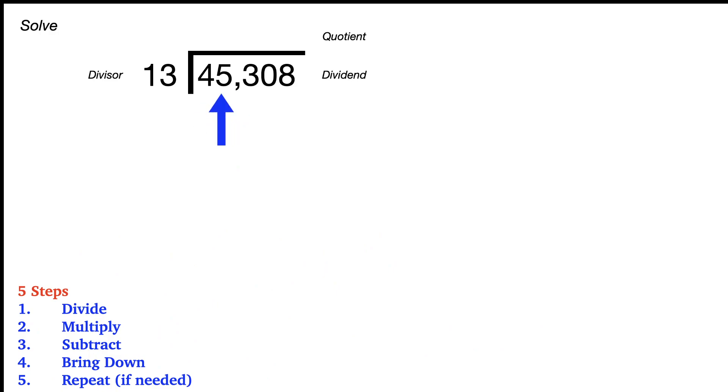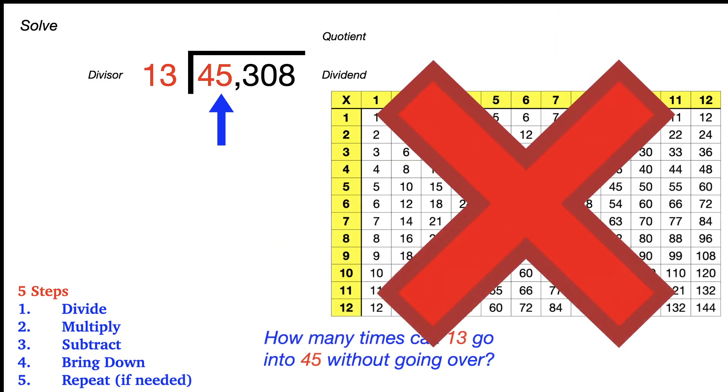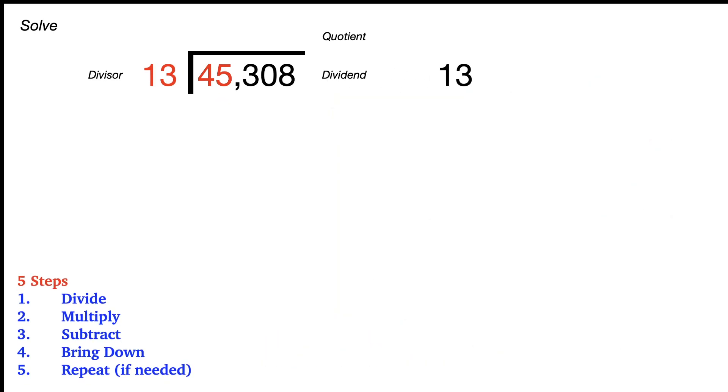All right, because it's two digits we'll start with the second digit. Ask yourself, this is the divide step, how many times can 13 go into 45 without going over? We won't be able to use our multiplication facts like usual because these are larger numbers and two-digit divisors, so we'll use some other strategies today. Let's take our 13 and one strategy is to break it into expanded form, which would be 10 and 3.